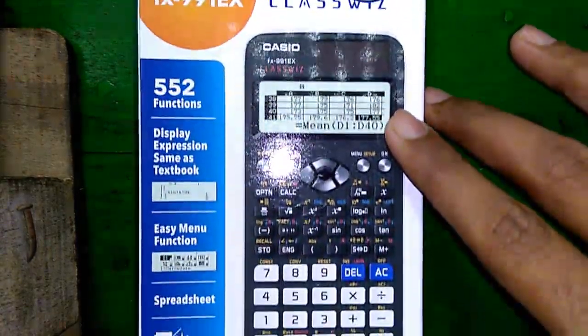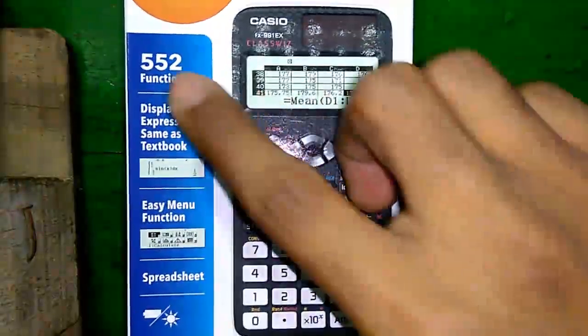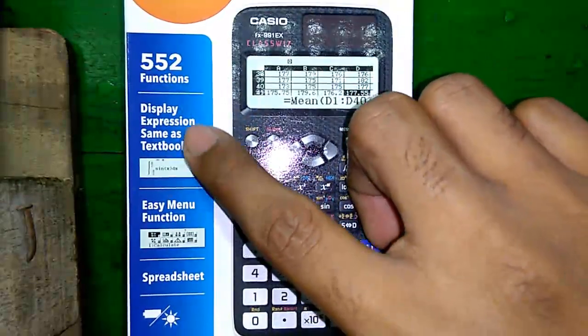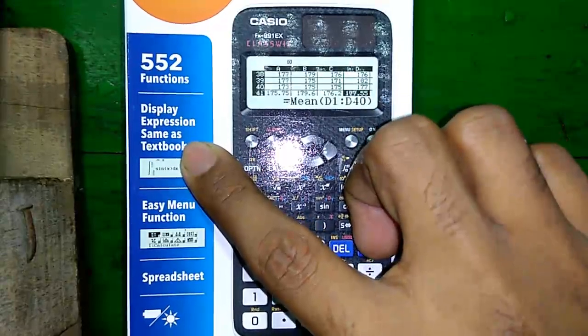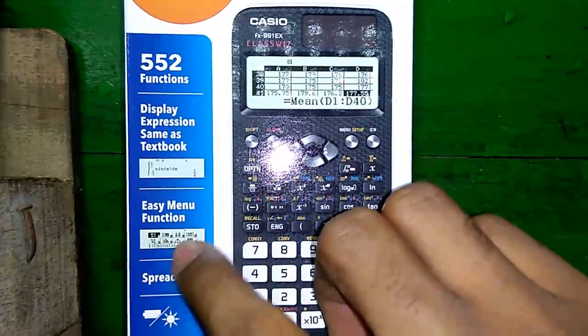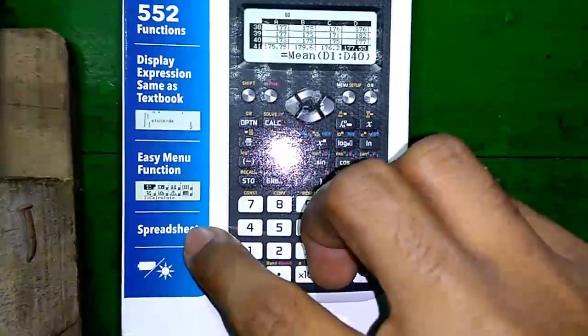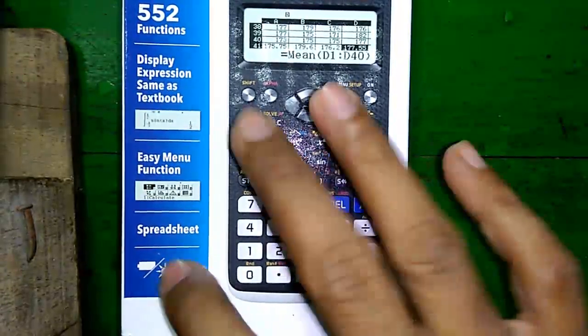So here is the calculator box. It has 552 functions, displays expression same as textbooks which is called natural textbook display. It has easy menu function which is graphical menu compared to older list-based menu. It has newer spreadsheet function and it runs on both battery and solar power.